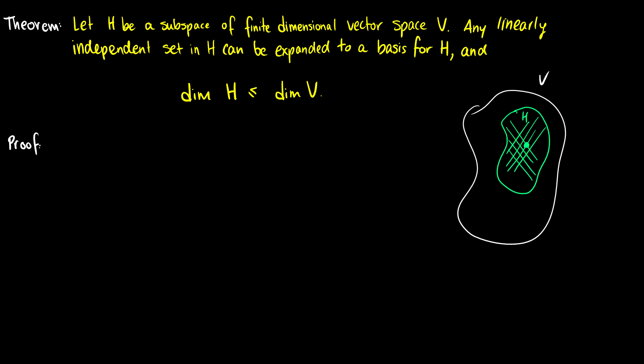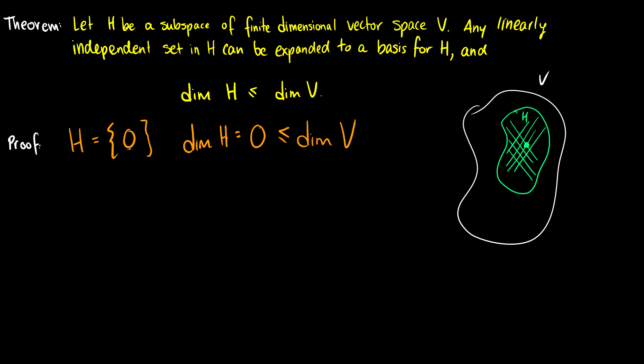Let's start with a very simple case. What if H is just equal to the zero space, the zero vector? Then what's the dimension of H? We know this is just going to be zero, and this is always going to be less than or equal to V, no matter what. So the dimension of H, if it's just zero, will always be less than or equal to the dimension of V.